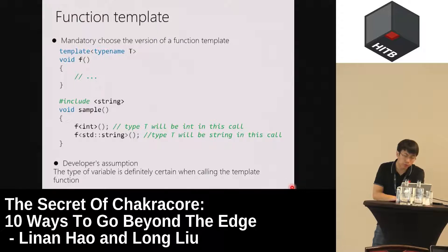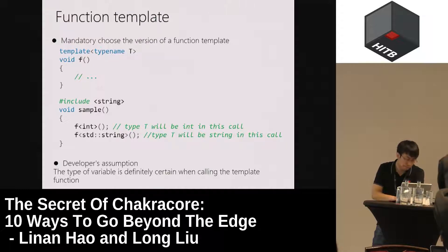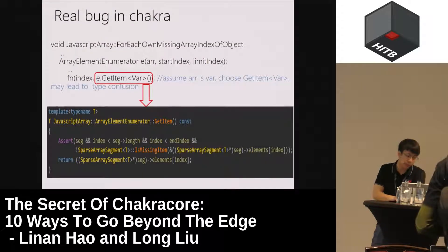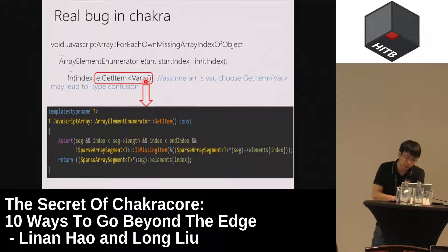Mandatorily choosing the version of a function template will also cause some problems. Developers often do that with the assumption that the type of a variable is definitely certain. But in Chakra, everything is possible — using some features in Chakra, this assumption can also be broken. For example, in function forEach_OwnMissingArrayIndexOf Object, the variable array can be any type of array. But the developer assumes it must be a var array, and explicitly chooses the var array version of the template function getItem, which causes a type confusion.